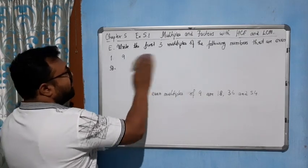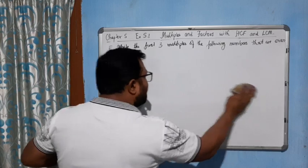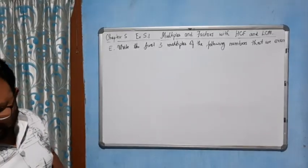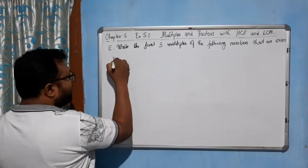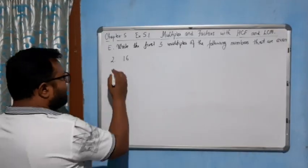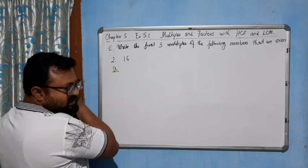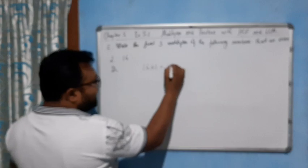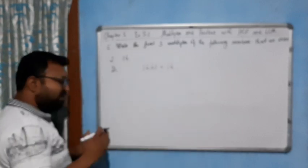Let's move to the next question. The second number is 16. This time the number is even, so let's see what happens. 16 into 1, I am getting 16, so this is an even number, so we will take this number.